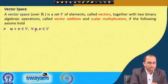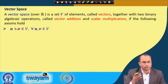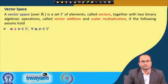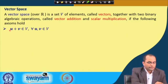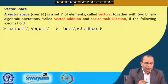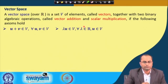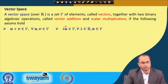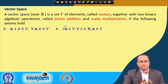The first axiom: if we take two elements U and V from the set V and add them, the new element should also belong to V. That is the additive closure property — we take any two elements, perform vector addition, and the result must be in V. Another property: lambda times U, where lambda is a scalar from R (or complex numbers), the scalar multiplication lambda·U must also belong to V. This is the closure property with respect to scalar multiplication.